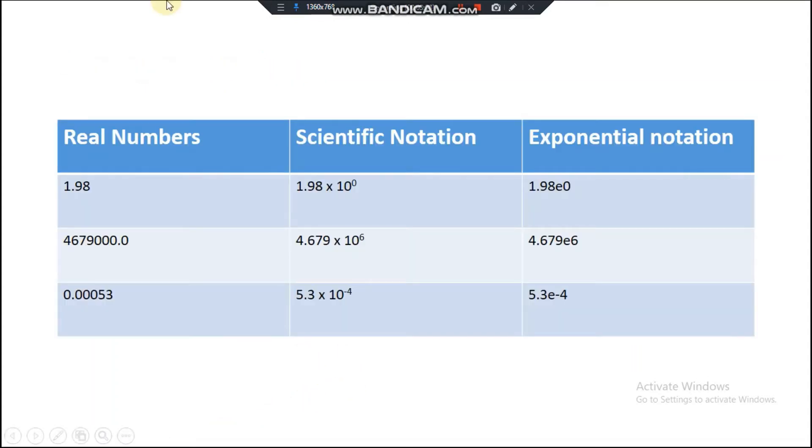This example shows real number, scientific notation and exponential notation. First, let's see 1.98. The real number value of 1.98 will be represented in scientific notation as 1.98 multiplied by 10 to the power of 0.